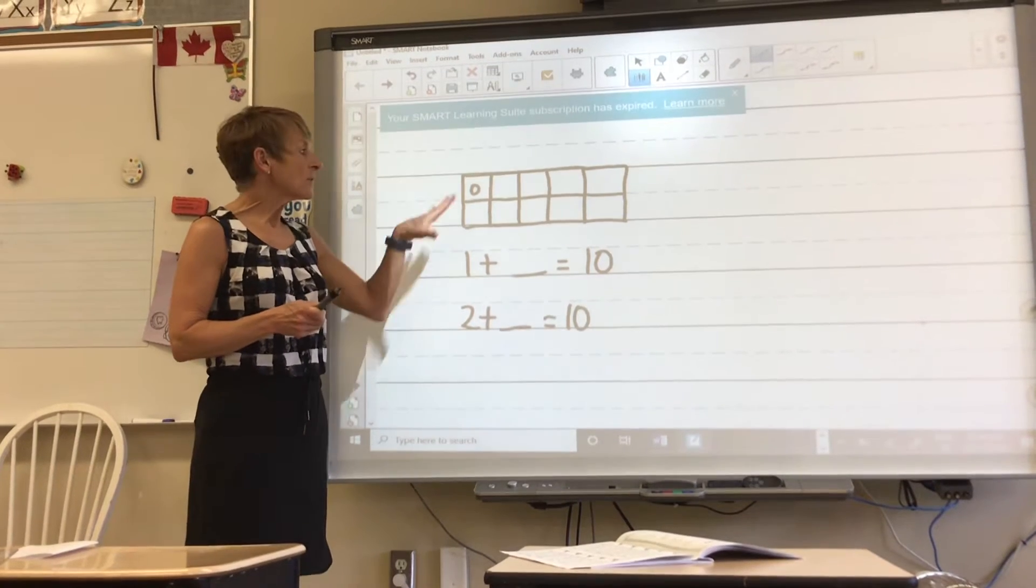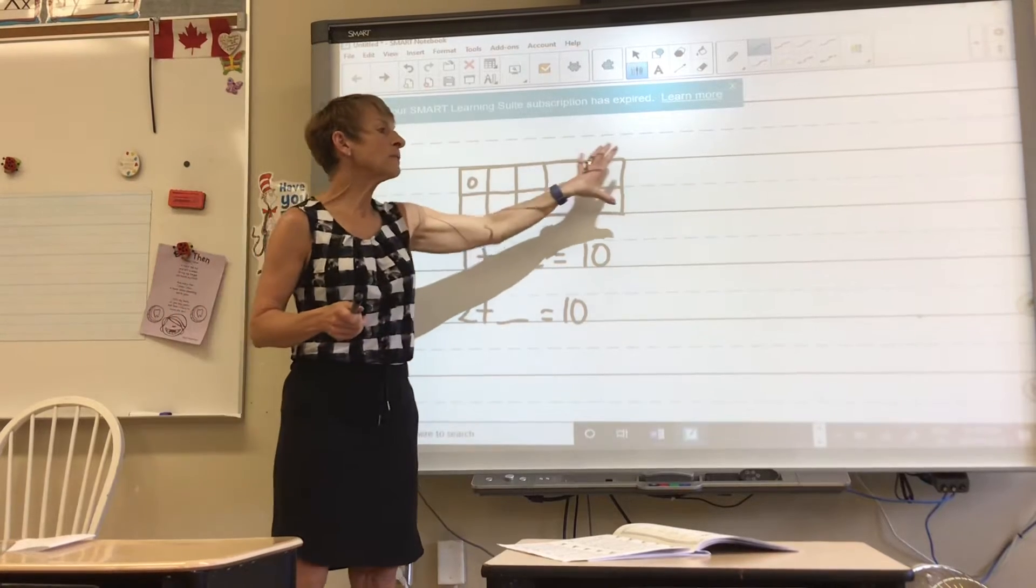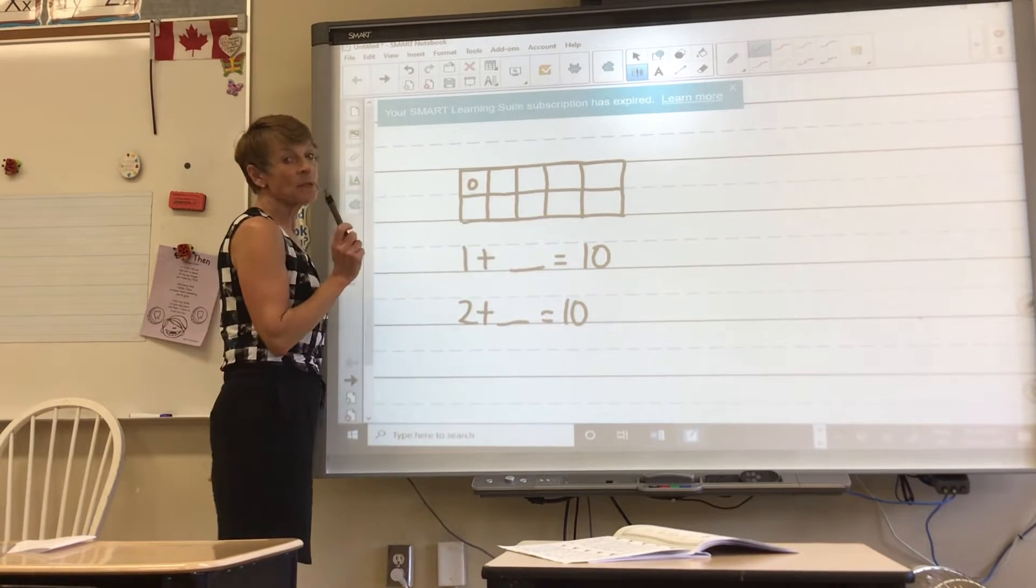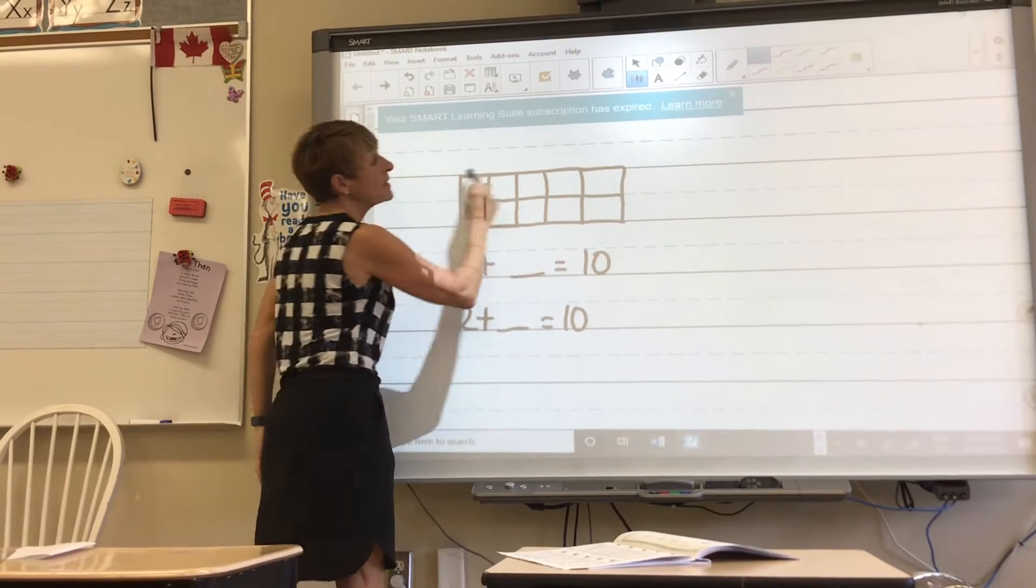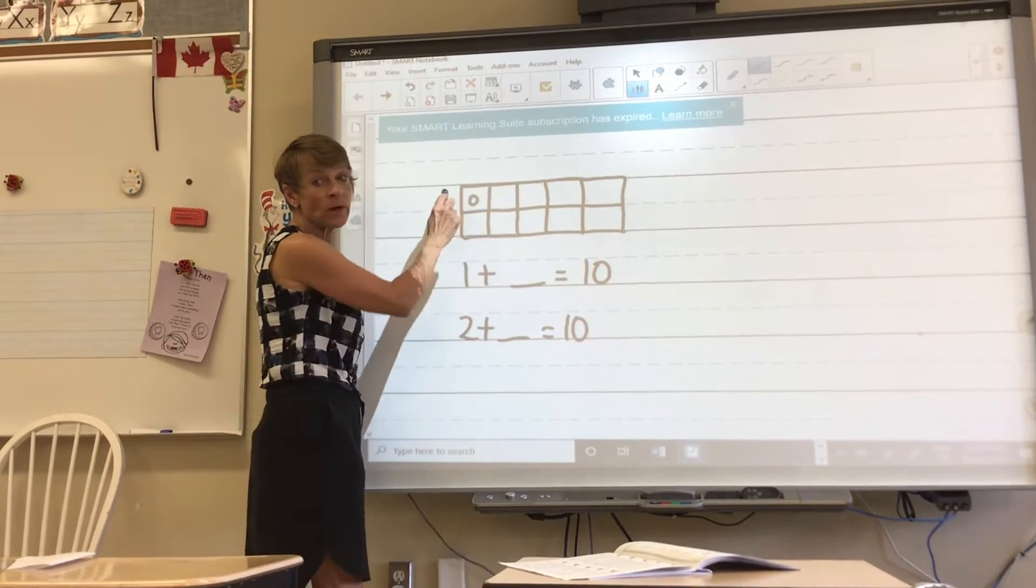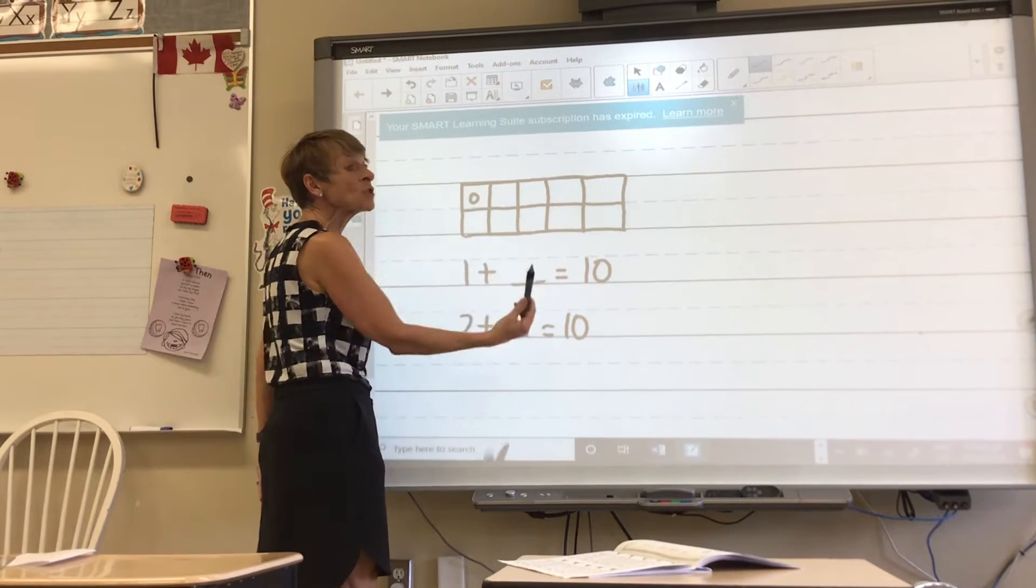Hello, kindergarten. Today we're going to talk about a 10 frame. This is a little frame and inside we're going to count how many squares. It's a square because all the sides are equal. This whole thing is a rectangle, but each cell is a square. So let's count how many squares.